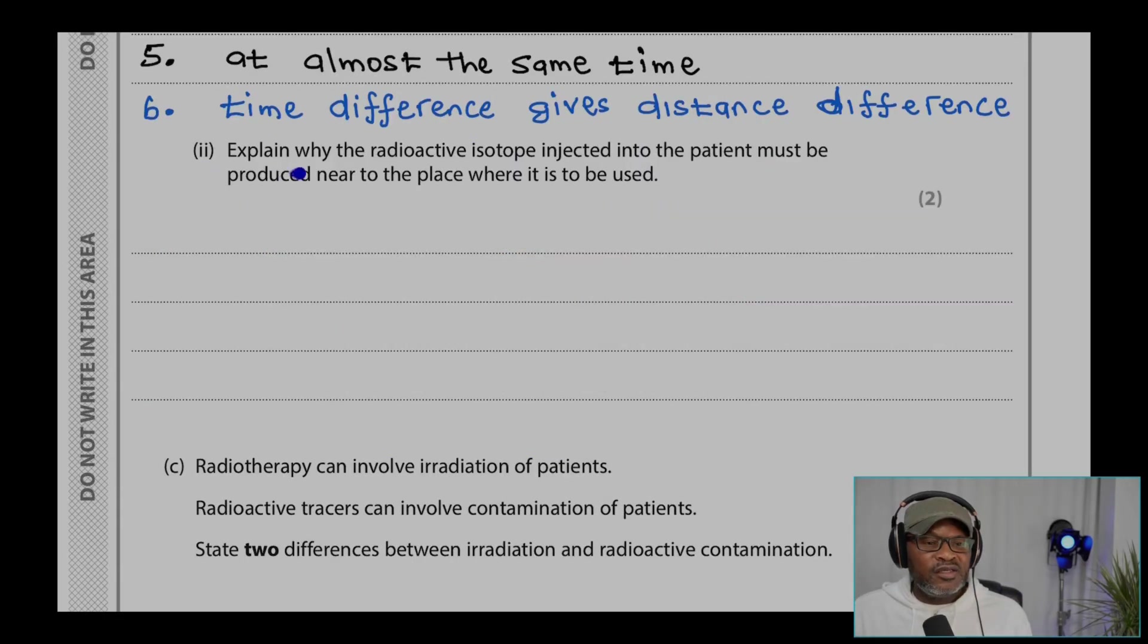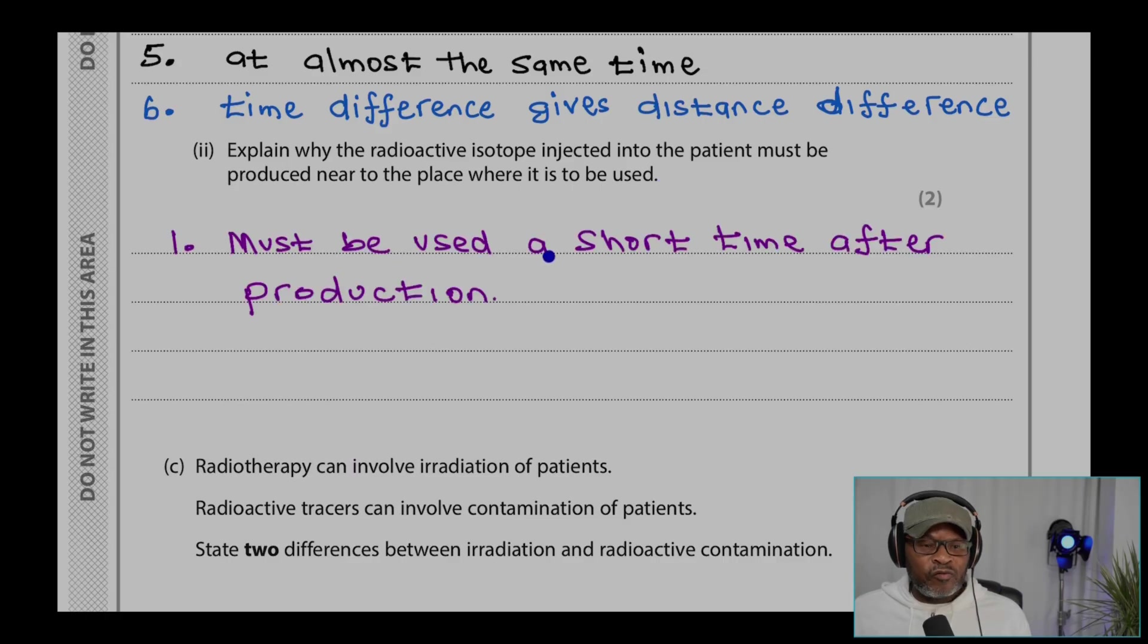Part two, explain why the radioactive isotope injected into the patient must be produced near to the place where it is to be used. It must be used for a short time after production, and therefore it will have a half-life that is short.